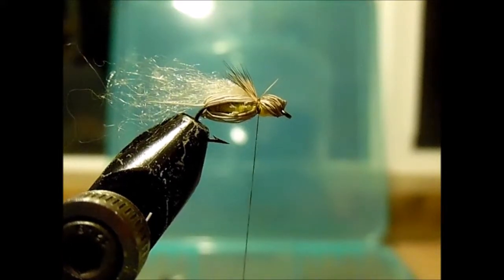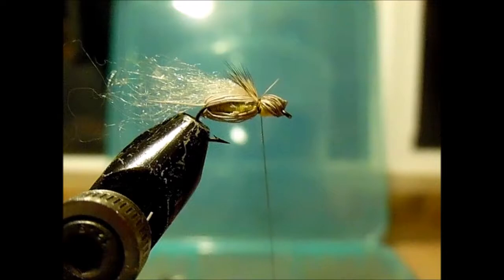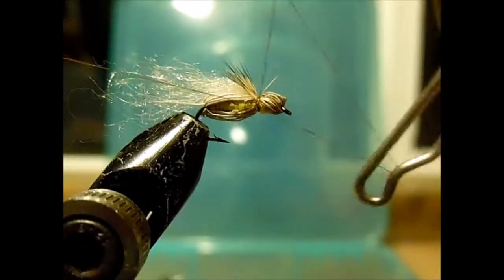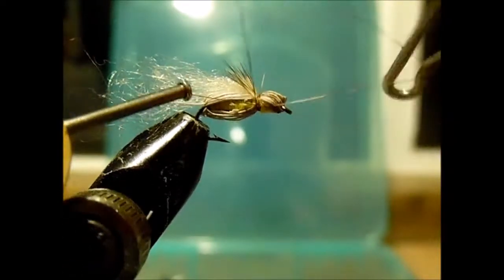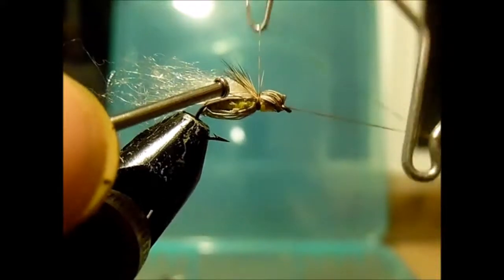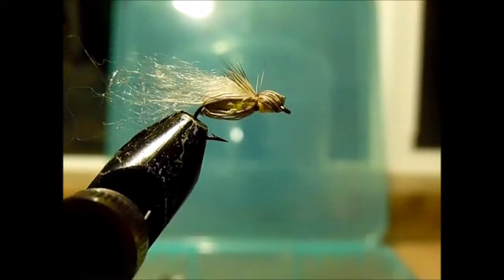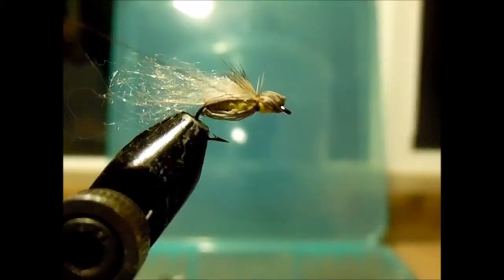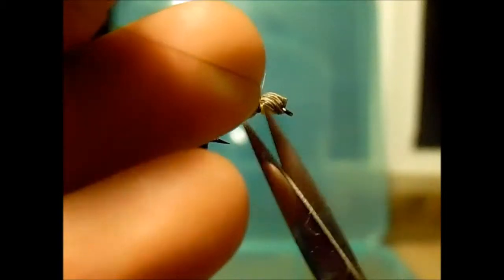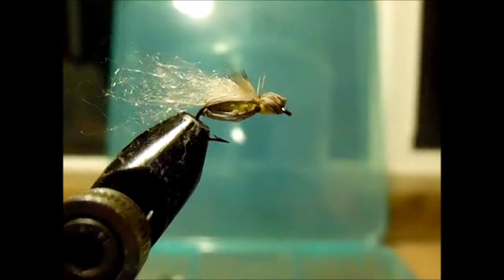So, now I'm just going to do the whip finish. As you all know, I'm going to do a 3-4 turn whip finish, until it looks nice, seat the knot, and then I will rinse it up, and I will snip it off.